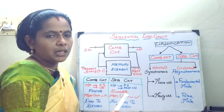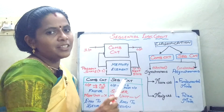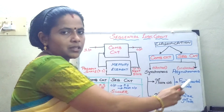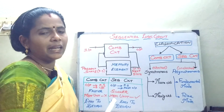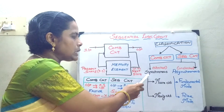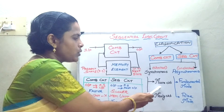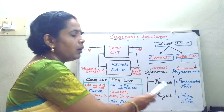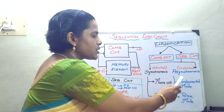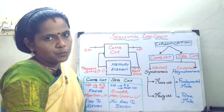Depending upon the clock signal and the input, the output will change. Whereas in asynchronous mode, the output changes independent of the clock signal — at any instant of time the data will be changing. In the synchronous circuit, you have two types: one is the Moore circuit and another is the Mealy circuit. Moving on to the asynchronous type, you also have two types: one is fundamental mode and another is pulse mode.